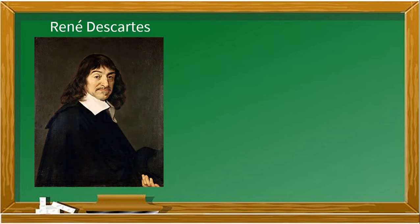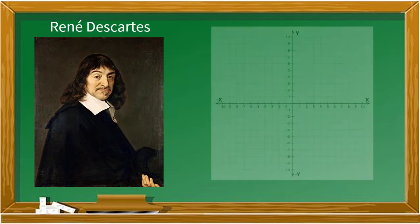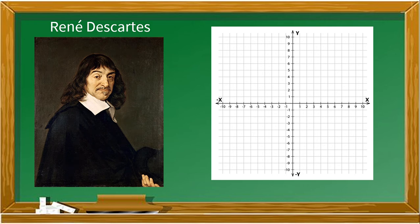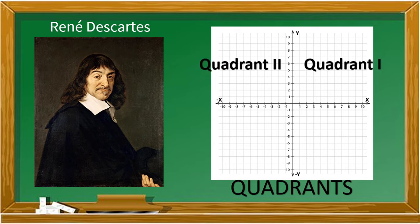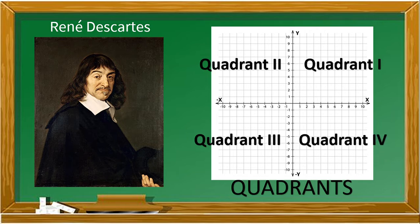Early in the 17th century, Rene Descartes, a French mathematician and philosopher, used horizontal and vertical number lines drawn perpendicular to each other to divide a plane into four regions called the quadrants. The four regions — quadrant 1, quadrant 2, quadrant 3, and quadrant 4 — are named in counterclockwise direction starting from the upper right-hand region.